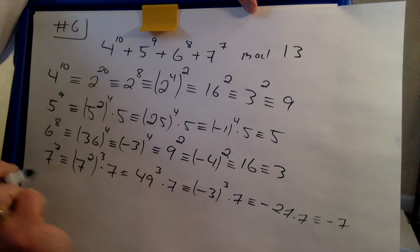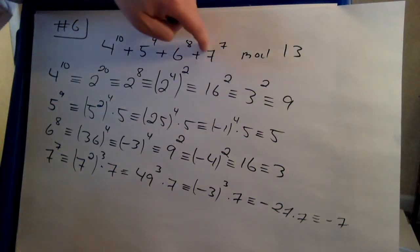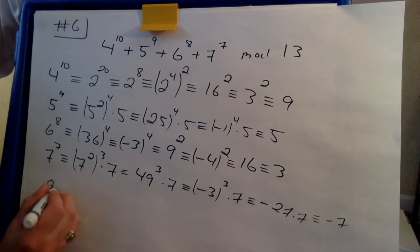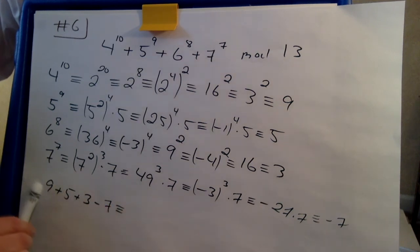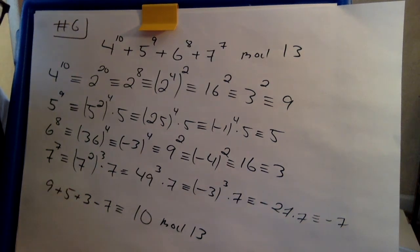I'm almost out of space here. So what I have to do is just add the 4 things up. 9 plus 5 plus 3 minus 7. 14, 17 minus 7 gives me 10. Everything here has been mod 13. Hooray!